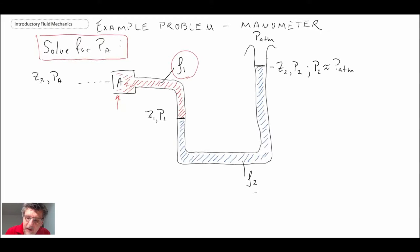And then we have a second fluid with density ρ₂. We can see that we have an interface here and we also have an interface up here.